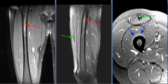A 17-year-old female soccer player complained of intermittent right anterior thigh pain for about two years. An MRI examination of the right thigh was performed.